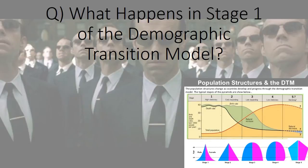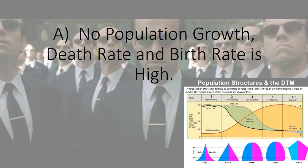What happens in stage one of the demographic transition model? No population growth — death rate and birth rate is high.